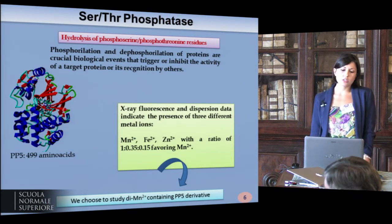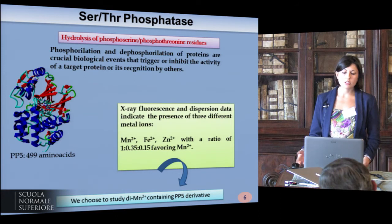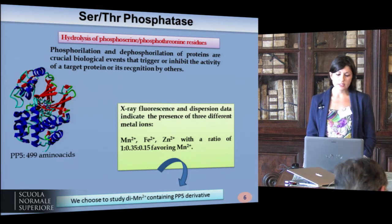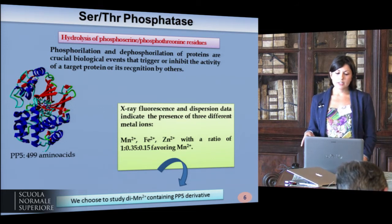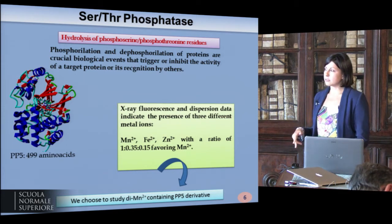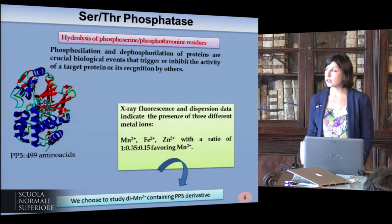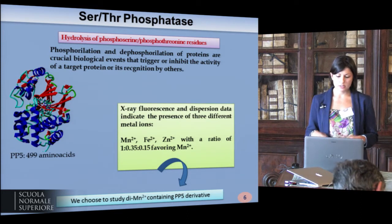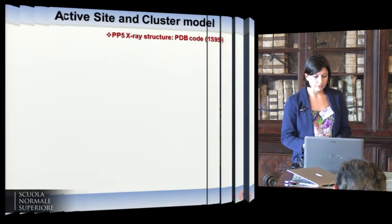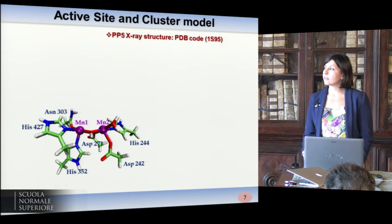Serine and threonine phosphatases catalyze the hydrolysis of phosphoserine and phosphothreonine residues. This enzyme is very important since phosphorylation and dephosphorylation of proteins are crucial biological events. Experimentally, it has been shown that this enzyme contains mostly a dimanganese cluster, even if iron and zinc have also been found in the structure. We chose to study the dimanganese-containing PP5 derivative, starting from the PDB X-ray structure.